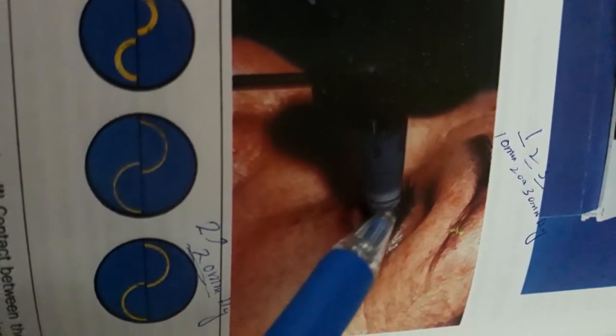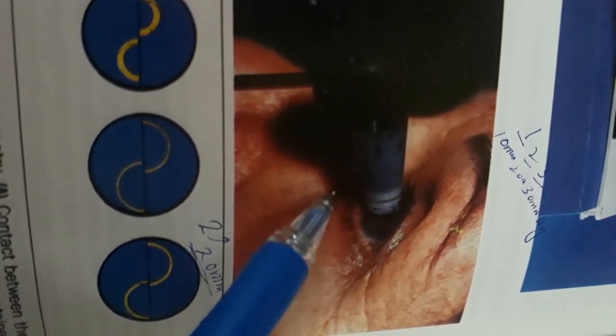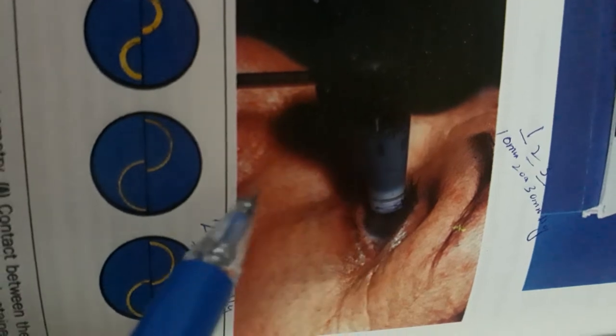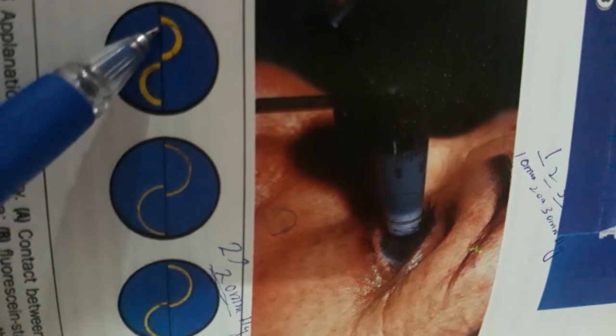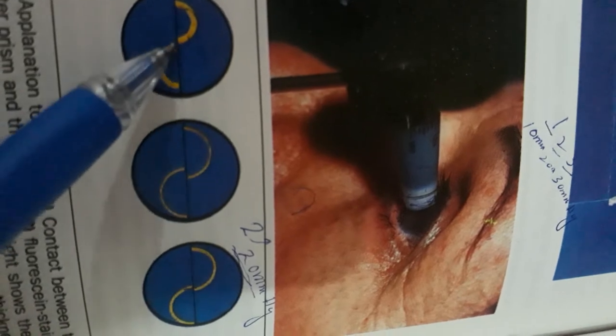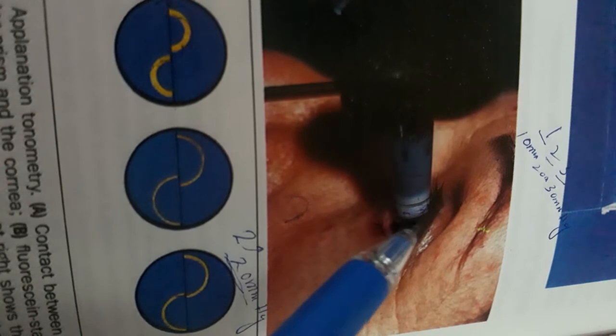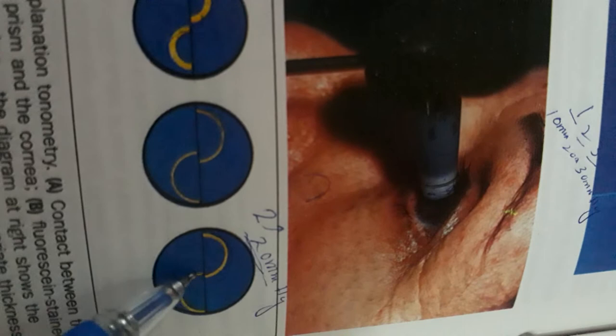The mires will be seen on a horizontal line. This represents the fluorescein-stained tear film touching the cornea. It is necessary to note that alignment should be clear.